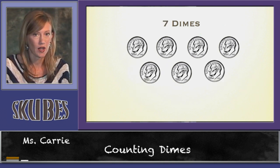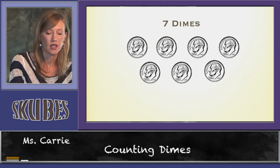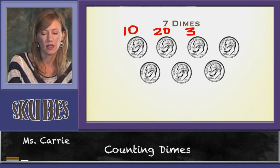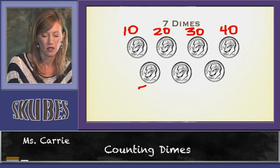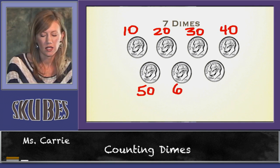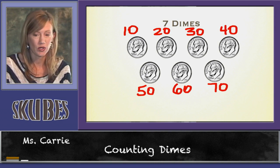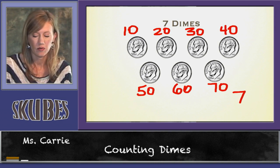Let's look at seven dimes and count by tens: ten, twenty, thirty, forty, fifty, sixty, seventy. Seven dimes is equal to seventy cents.